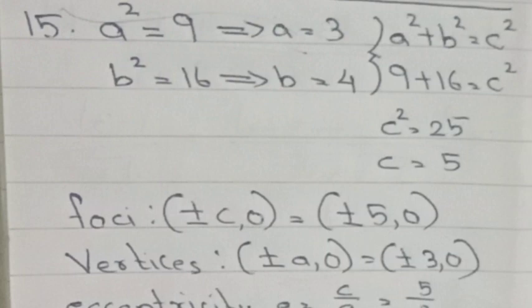Answer: a² = 9, so a = 3. b² = 16, so b = 4. Using a² + b² = c²: 9 + 16 = c², so c² = 25, c = 5. Foci: (±c, 0) = (±5, 0).